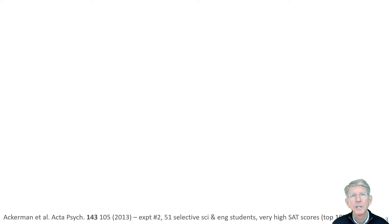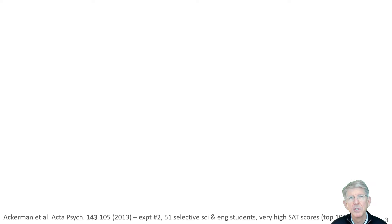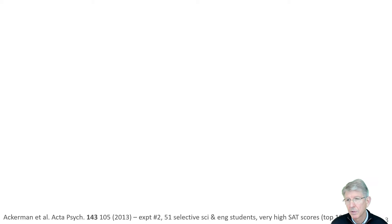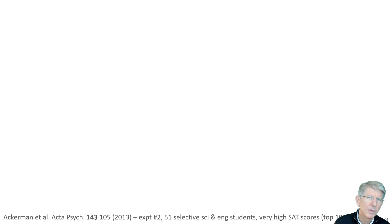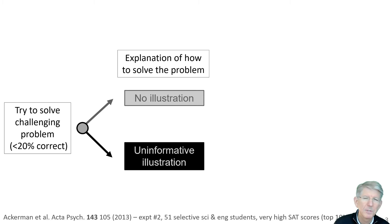The first study is going to involve students who are quite bright. These are science and engineering students. They've been chosen because they have very high SAT scores, and so we can consider them as representative of bright people, and we'll see how well they do with contextual details.